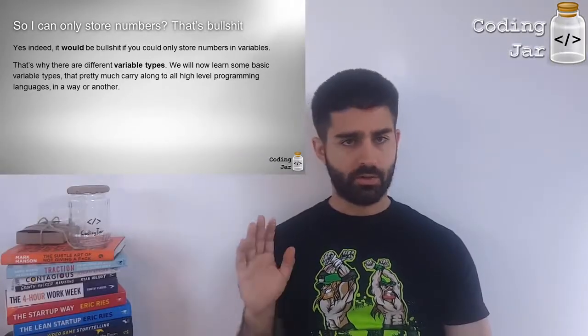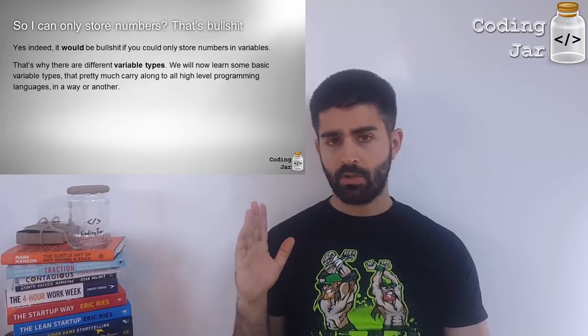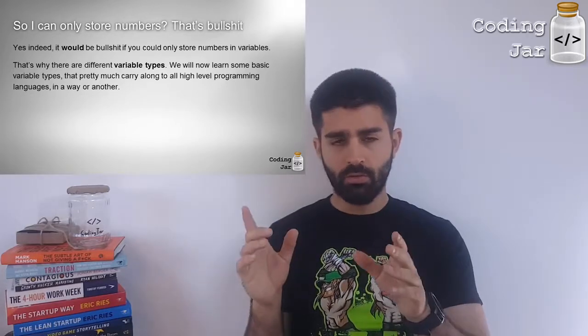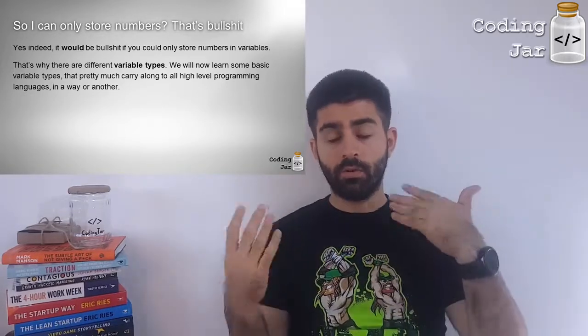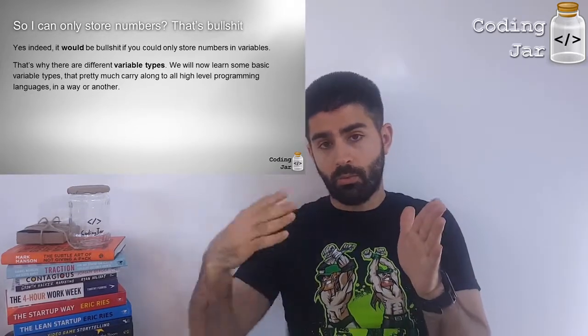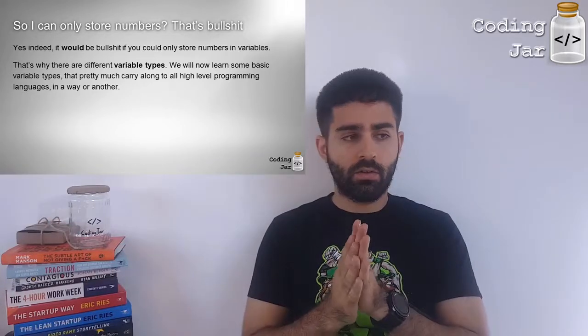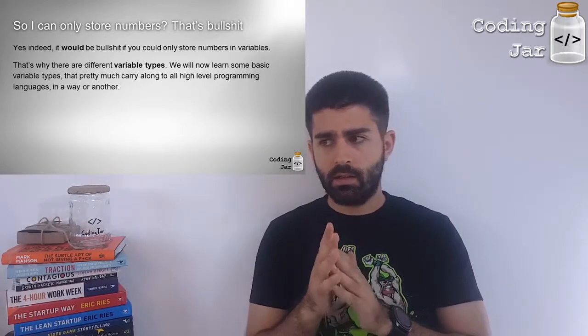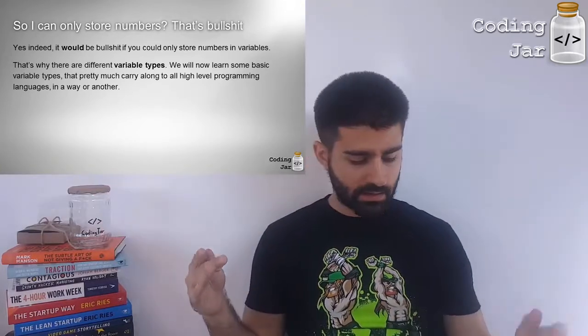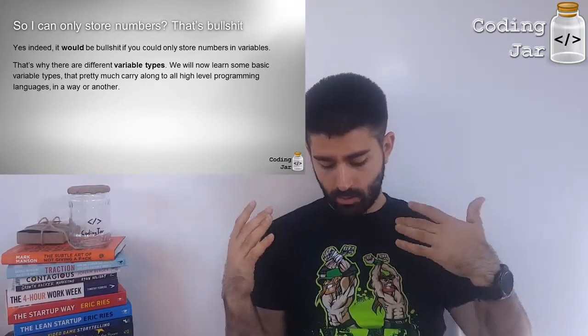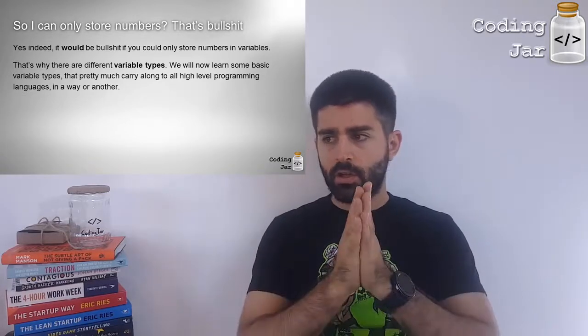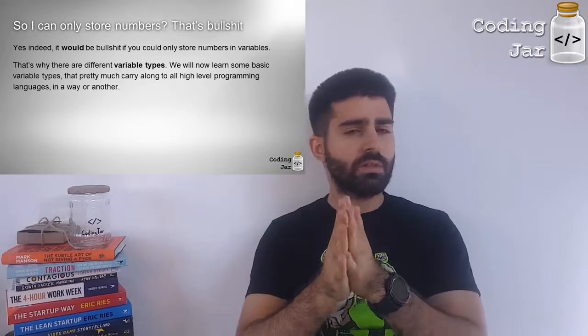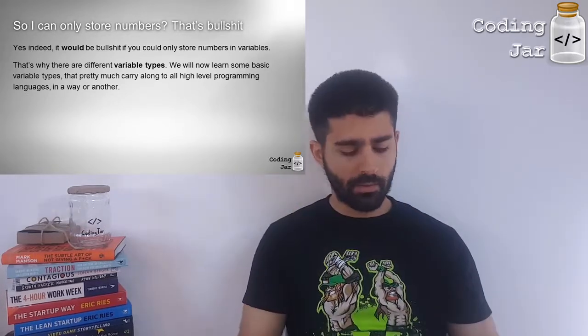So, can you only store numbers? No. It depends on the programming language. Usually you can store integer numbers, you know, whole one, two, three. Floating point numbers like one point something. You can store characters A, B, C, D. You can store text like hello world, something like that. But it depends on the programming language and what it allows to be stored. In the next slide we're gonna see some of the most major variable types which are commonly used among all programming languages.